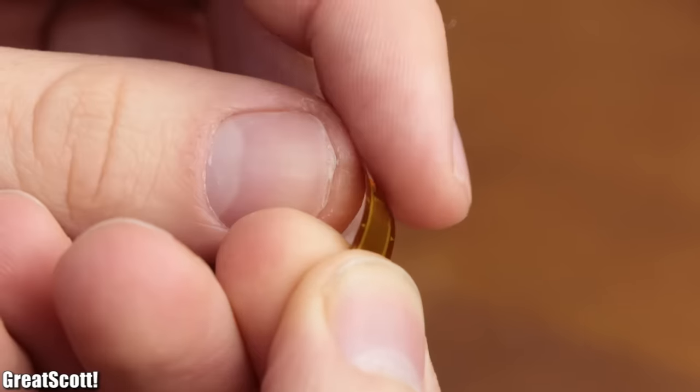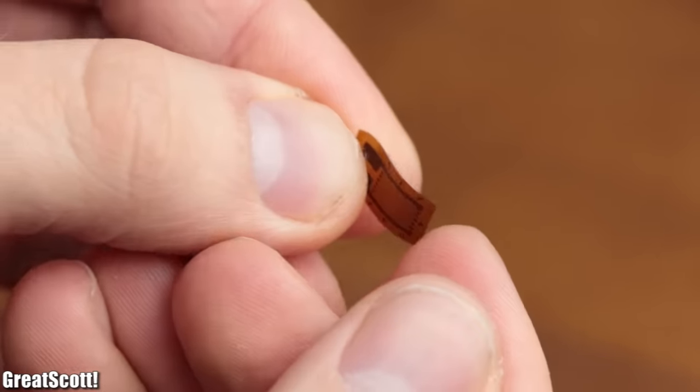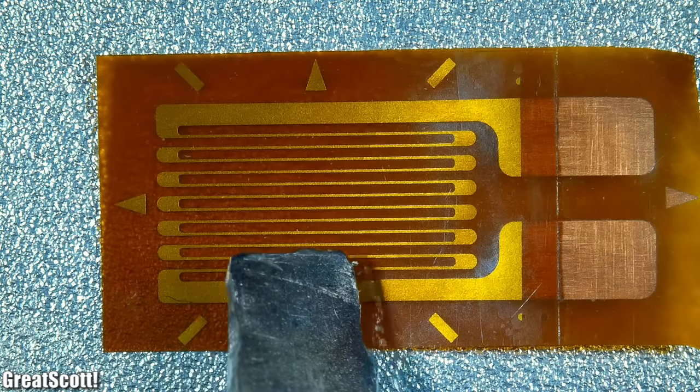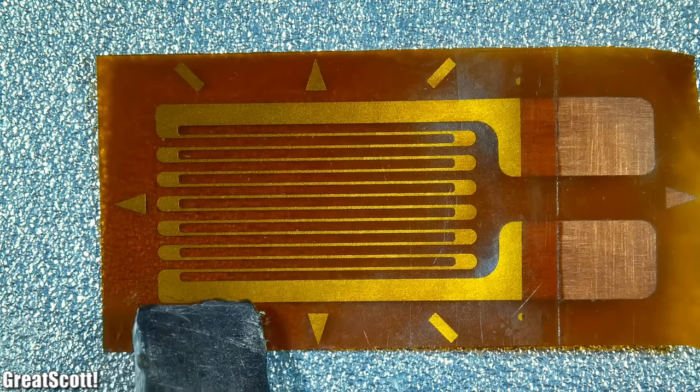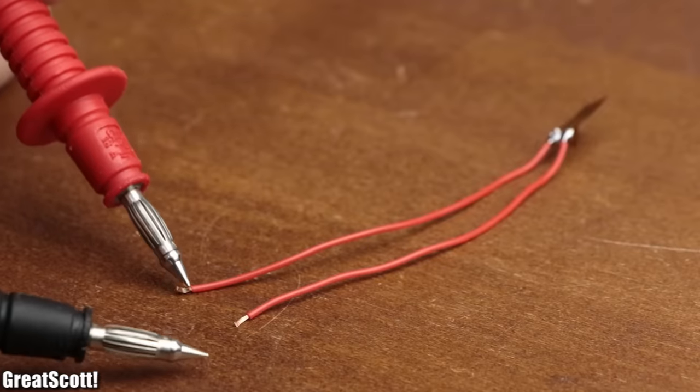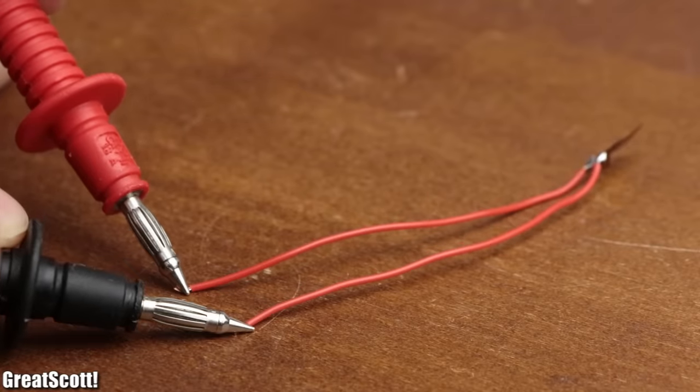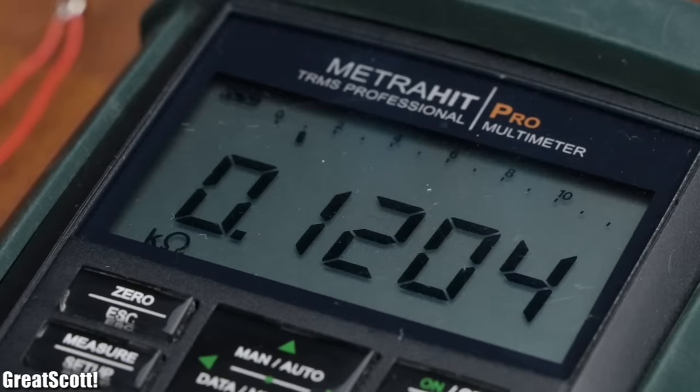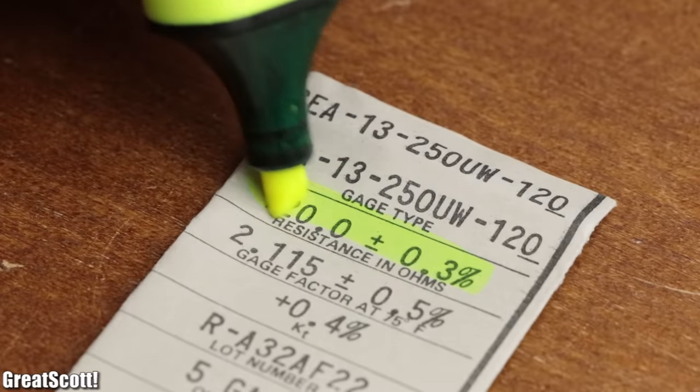On closer inspection, a strain gauge is just a flexible piece of plastic on which a zigzag pattern of resistance wire is secured. By soldering two thin wires to its contacts and measuring the resistance of this particular strain gauge, we get a value of around 120.4 Ohms, which correlates with its datasheet.